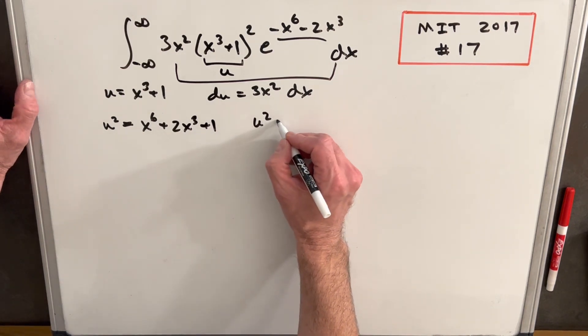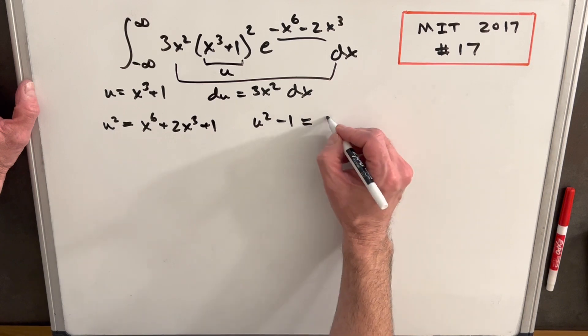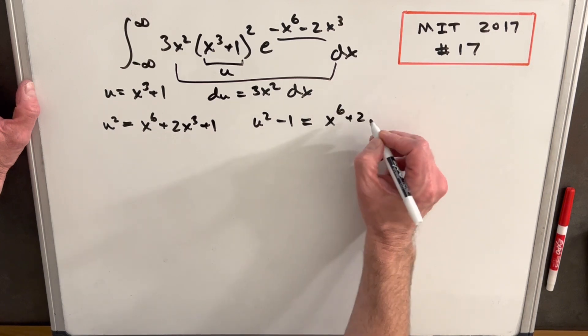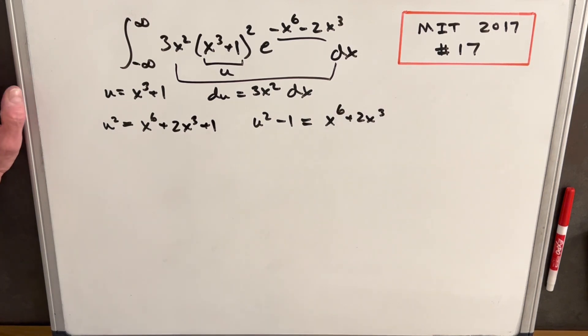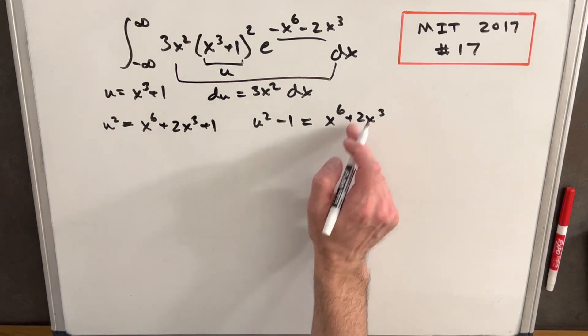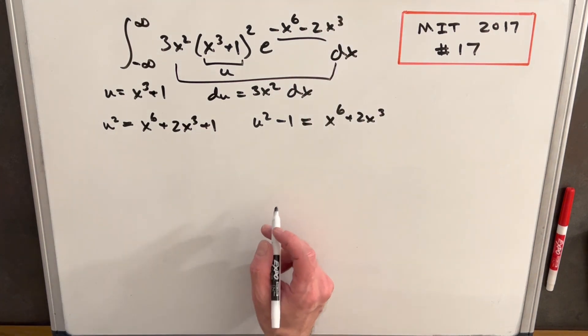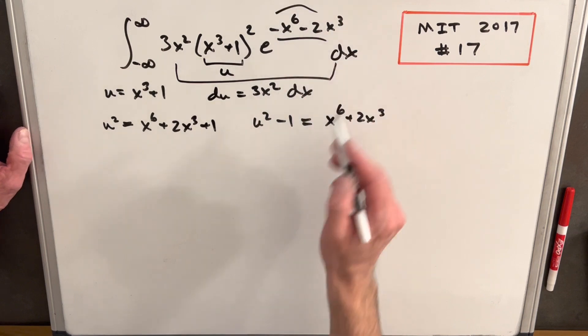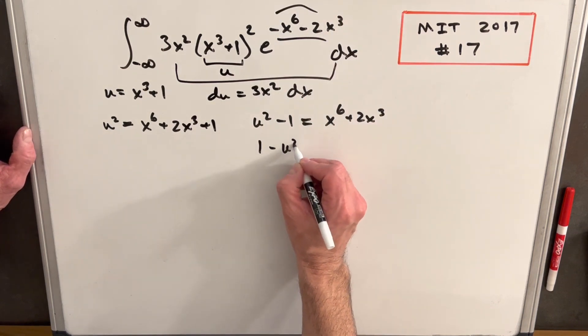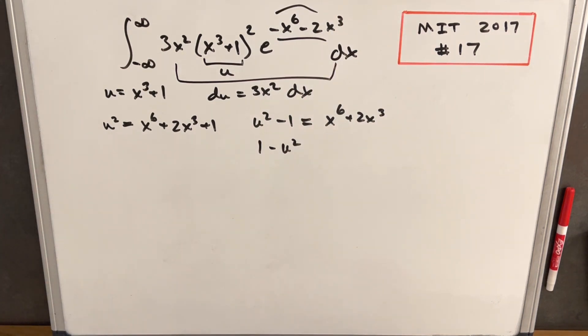So then if we had, now we also could get the value for u squared minus 1. So that's going to be x to the 6 plus 2x cubed. And so the only difference between this and this is a minus sign. So this expression, this exponent up here is actually gonna be 1 minus u squared. Just multiplying this by a negative 1.